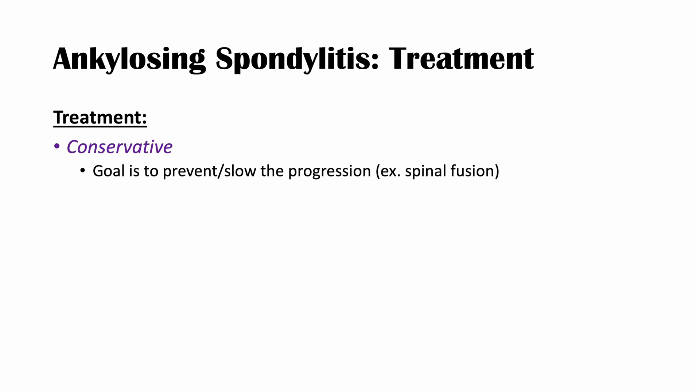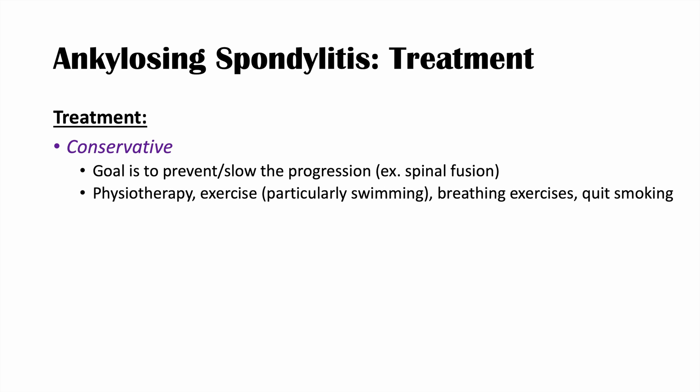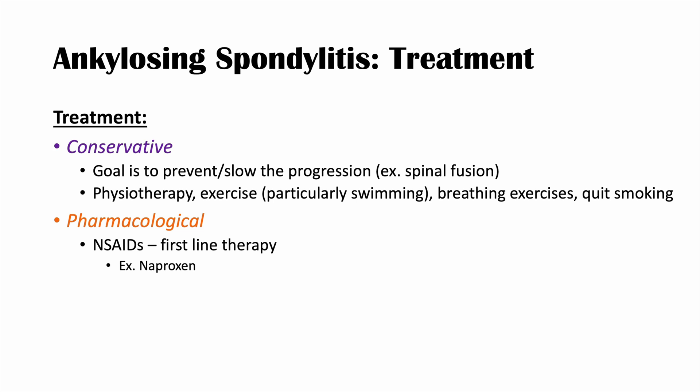Treatment of ankylosing spondylitis begins with conservative measures aimed at preventing or slowing spinal fusion progression. Physiotherapy helps reduce mechanical stress and build paraspinal muscles to support the spine. Swimming and breathing exercises are also beneficial. Quitting smoking can help reduce the inflammatory process. Pharmacologically, NSAIDs such as naproxen or celecoxib are first-line therapy. For prolonged high-dose NSAID use, a proton pump inhibitor should be added for gastrointestinal protection, with monitoring of blood pressure and kidney function.